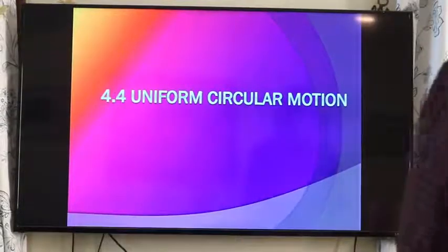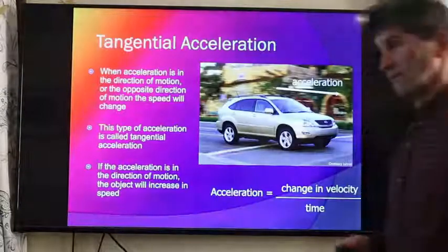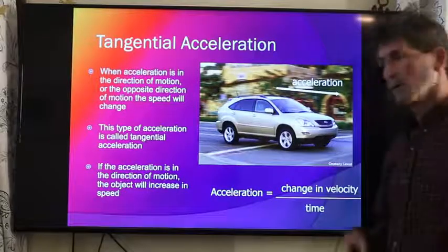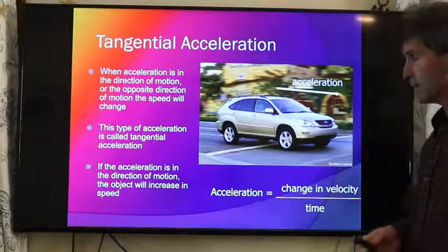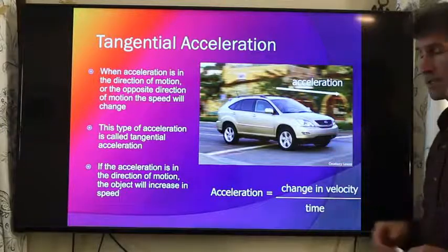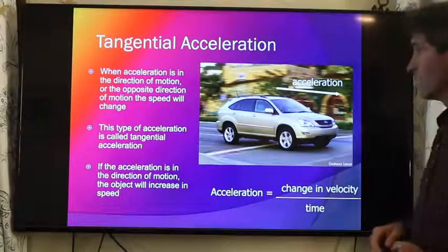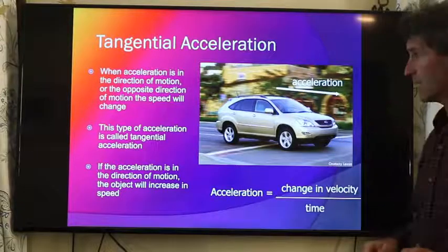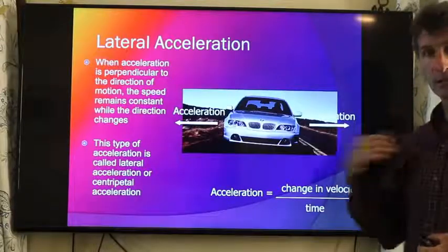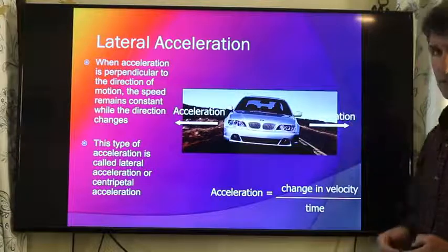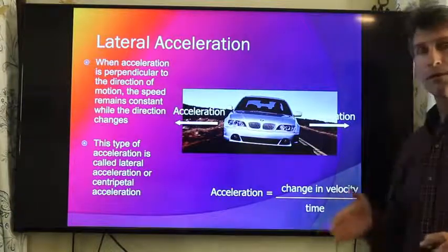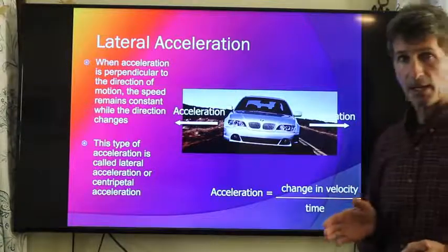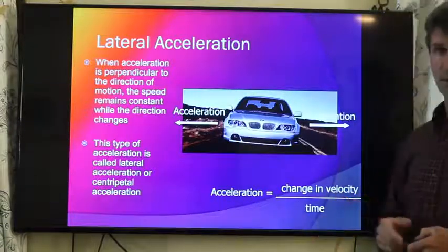Uniform circular motion. Now we're going to look at a different type of acceleration. We're going to look at acceleration for an object going around in a turn. Most of the acceleration we've talked about so far has been tangential, basically acceleration going in the direction that we're traveling. But lateral acceleration, also known as centripetal acceleration, causes an object not to change its speed but rather change its direction.